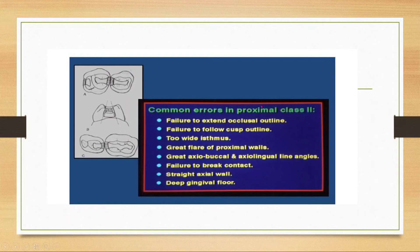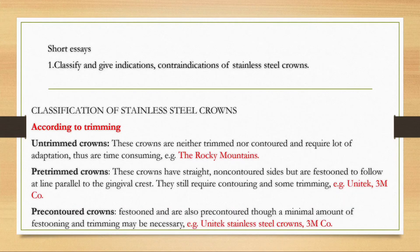Common errors in proximal Class 2 preparation include: failure to extend occlusal outline, failure to follow the cuspal outline, too wide isthmus, great flare of proximal walls, great axiobuccal or axiolingual line angles, failure to break the contacts, straight axial wall, and deep gingival floor.